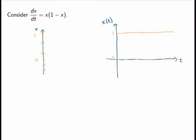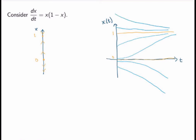Now let's translate the phase line into solution graphs. For solutions where x is negative, the arrows indicate they're decreasing for all negative x. For solutions between 0 and 1, they're increasing for all values in that interval, curving upward toward x=1. For solutions above x=1, they're decreasing toward x=1. Just from the phase line, I've sketched solutions for all kinds of initial conditions very quickly, and I can now check whether the behavior is consistent with expectations from my physical or biological model.